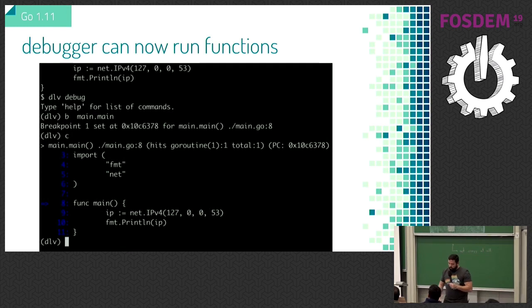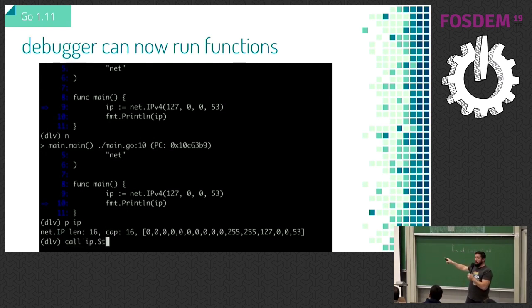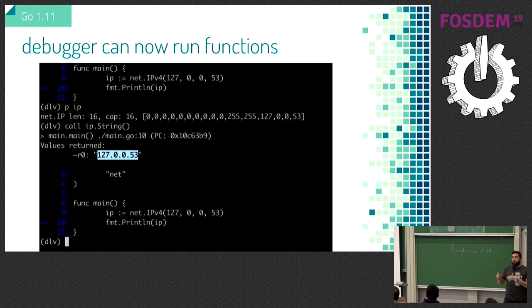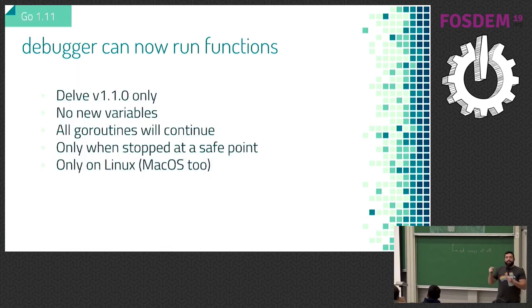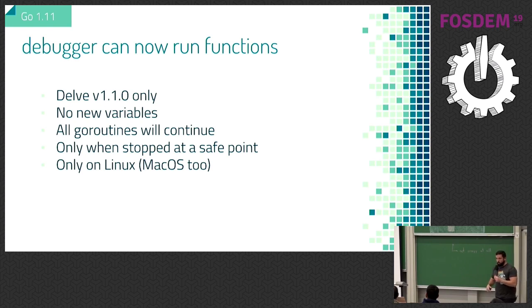The debugger can now run functions. When you're printing an IP, previously you got all that random stuff, but now you can actually call the string method and get the proper value. It is pretty limited though — there are many things you cannot do inside that function. It only works on Linux, except that the screenshot is from a Mac, so it also works on Mac but probably not as well. Constraints: you cannot create new variables, you cannot stop all other goroutines, and you need to stop at a breakpoint into a safe point.